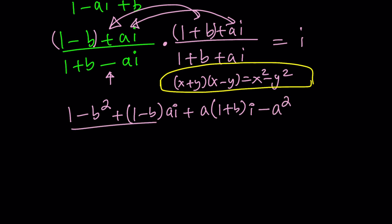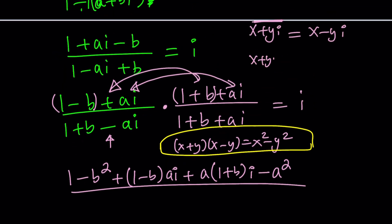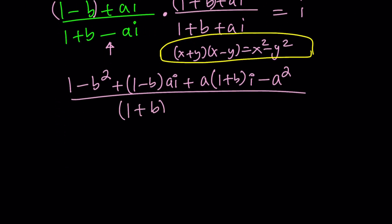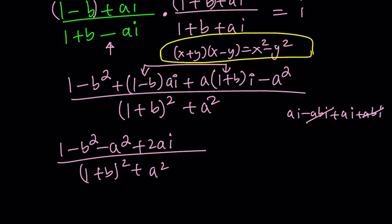The whole thing is divided by what? If you multiply x plus yi by its conjugate you get difference of two squares but in the complex world that translates into sum of two squares because i squared is negative 1. So the denominator is going to be 1 plus b squared plus a squared. This equals i but we're not going to worry about it right now.